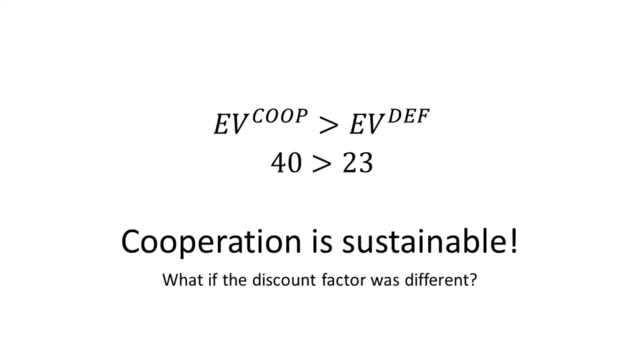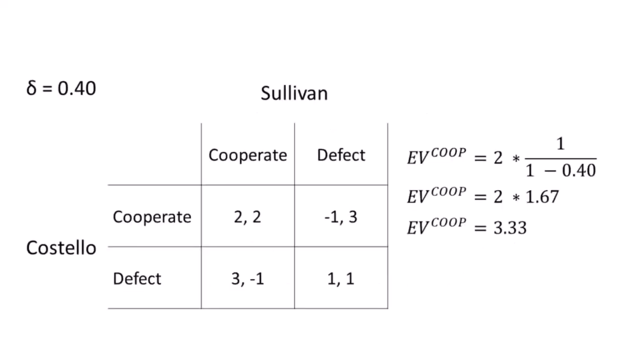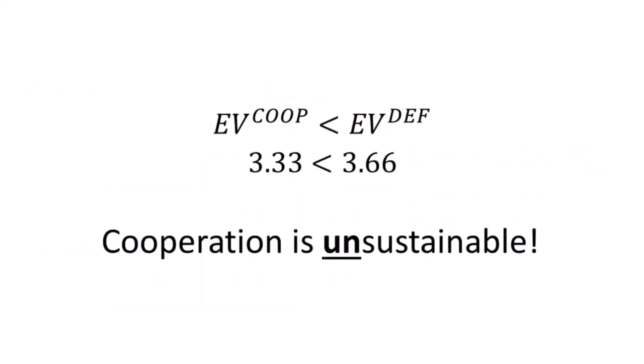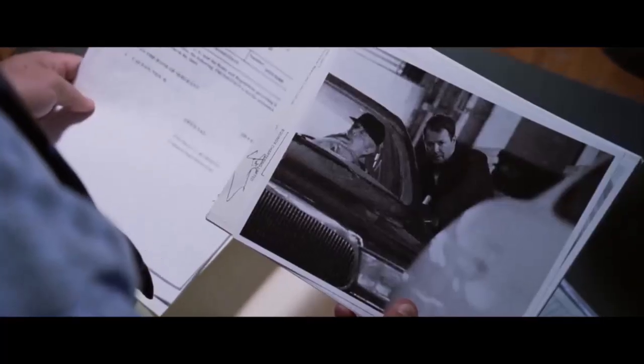But what if the discount factor were different? In this example our payoffs are the same, but the discount factor decreases substantially to 0.4. As you can see, the expected value from cooperating also decreases a lot — it's now 3.33 rather than 40. Likewise, the expected value from defecting is also low, but under these conditions it's actually greater than the expected value from cooperation. So defection wins: one of the players will end up defecting to gain that greater payoff.